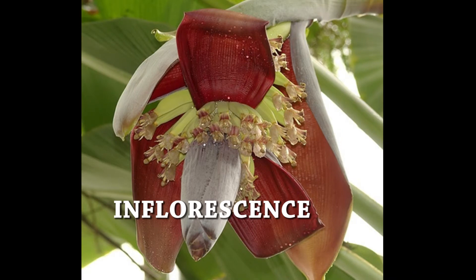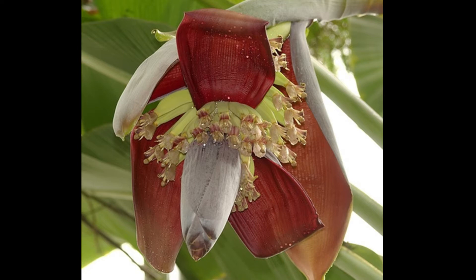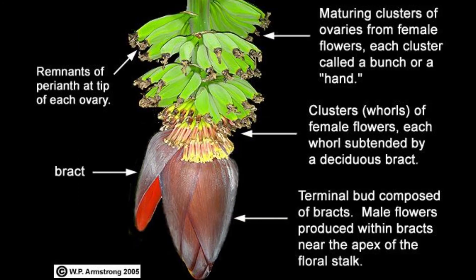The inflorescence initiates in the heart of the pseudostem. It is a terminal inflorescence and positively geotropic. The distal end of the inflorescence consists of male flowers, always covered with bracts. Female flowers are at the proximal end of the inflorescence. Flowers in between have mixed characters.